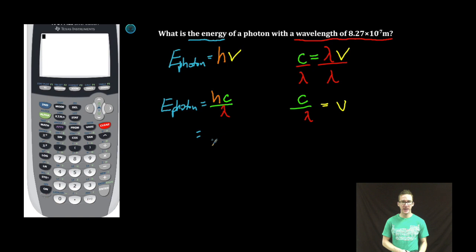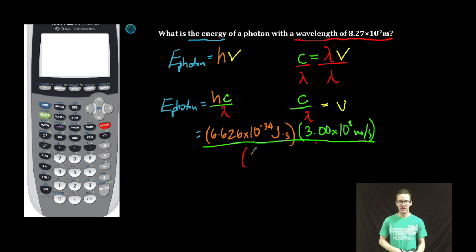Now it's time to plug and chug. Planck's constant 6.626 times 10 to the negative 34 joules times seconds, times the speed of light 3.00 times 10 to the negative 8 meters per second, divided by our wavelength 8.27 times 10 to the negative 7 meters. Close parentheses.